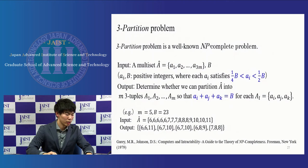The 3-partition problem is a well-known NP-complete problem. There are two important points for our proof. b/4 is smaller than ai, and ai is smaller than b/2, and ai plus aj plus ak is equal to b.